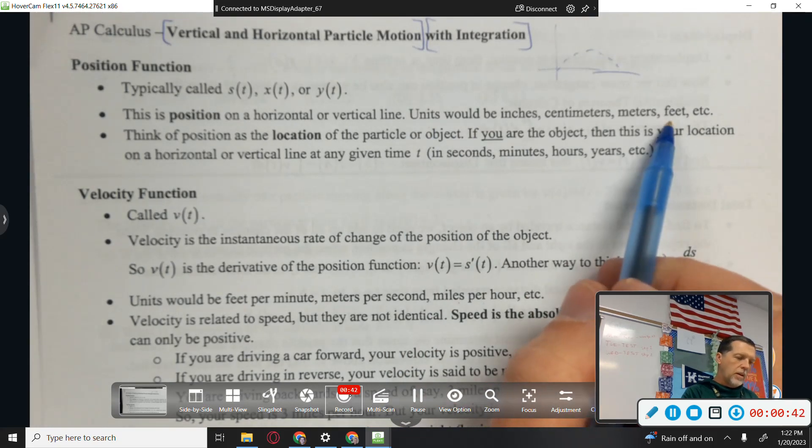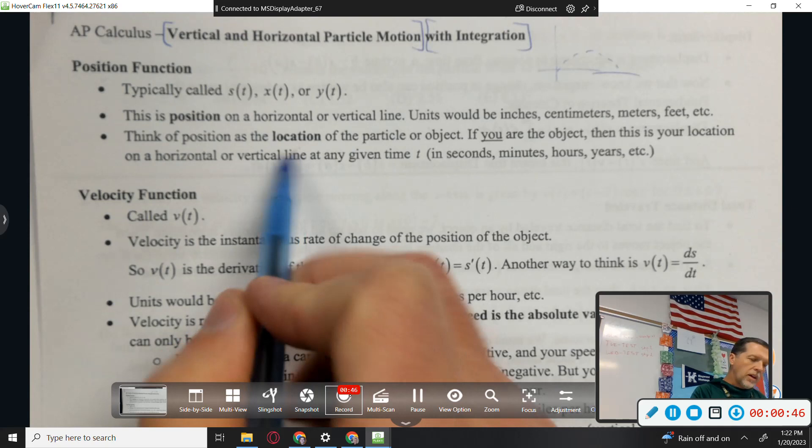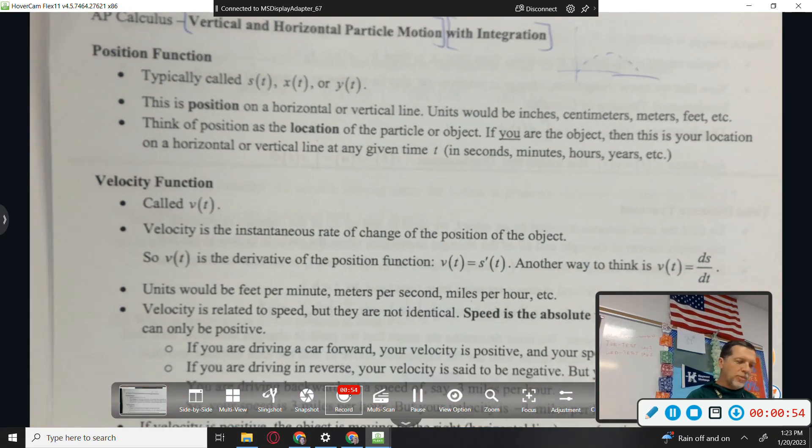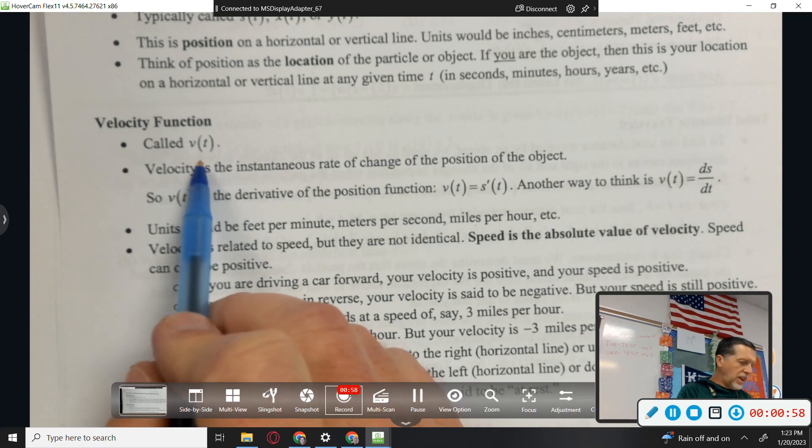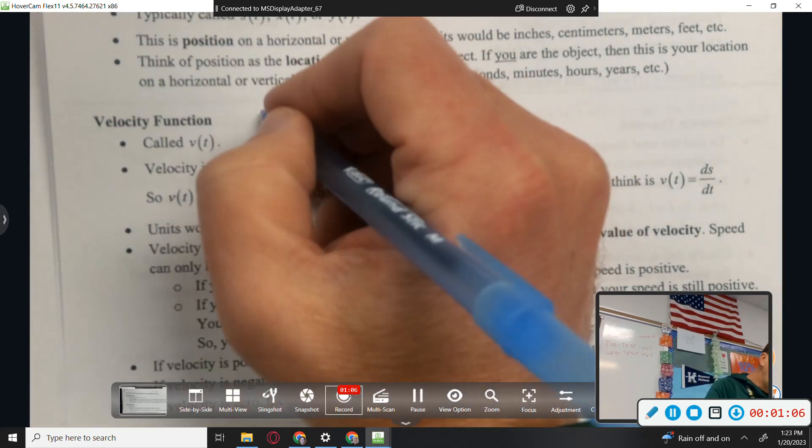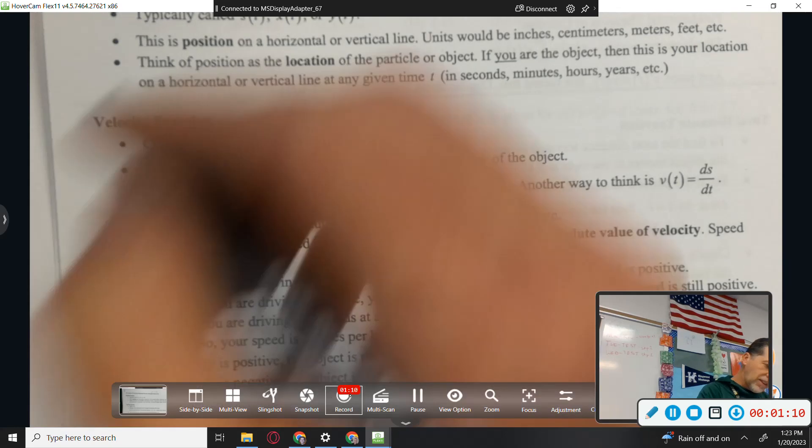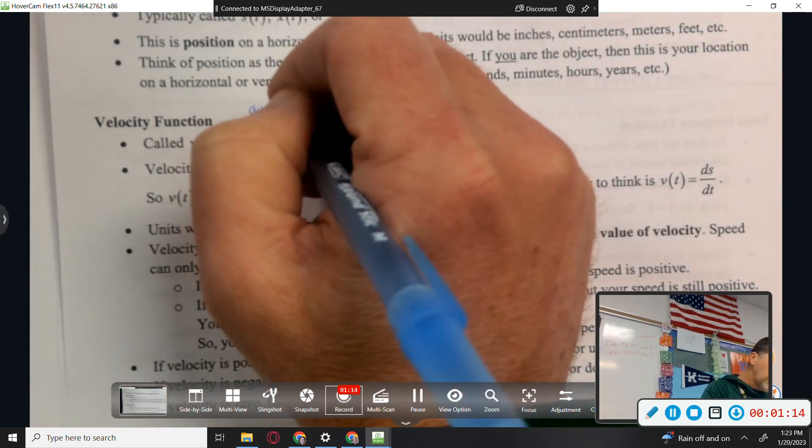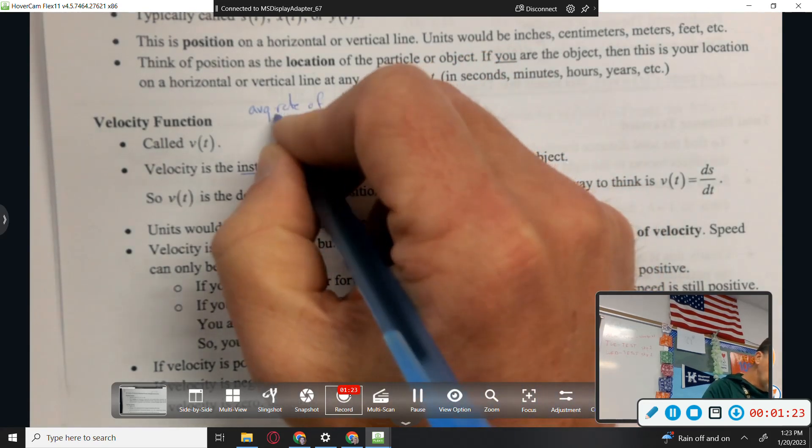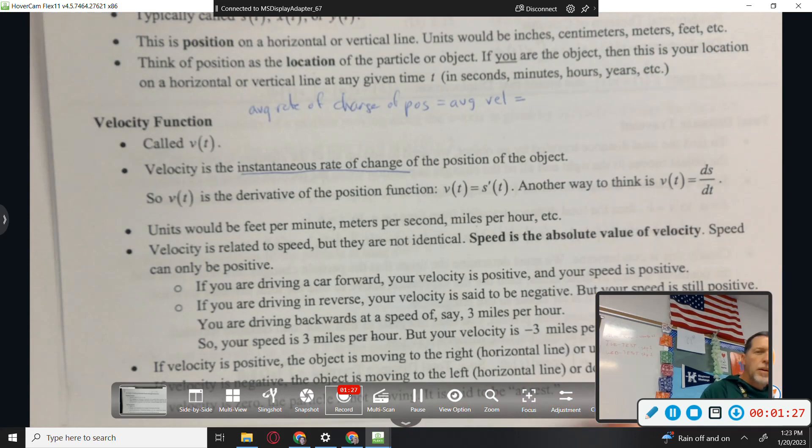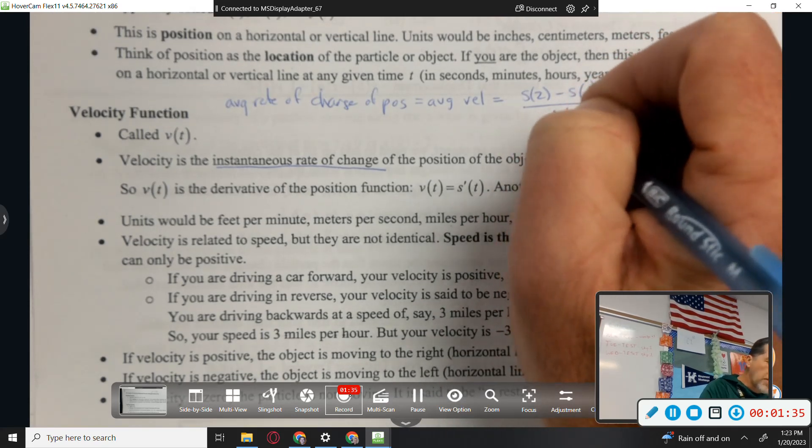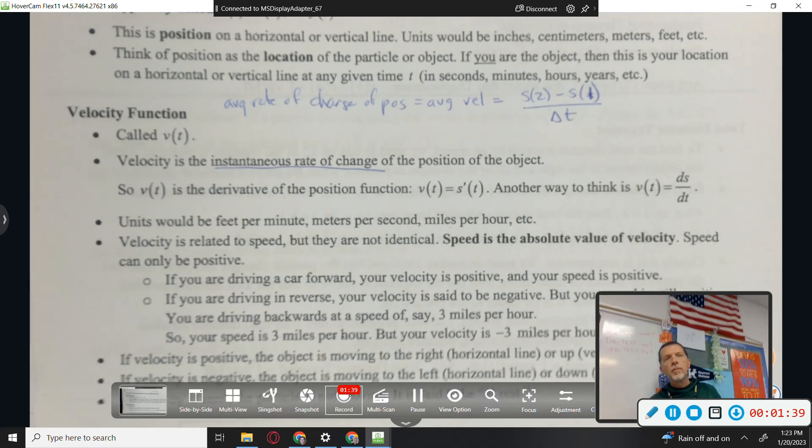Units would obviously be distance units. Position is the same as the location. If you are the object, then this is your location. And T is in time. We've done this already. We're just going to add some stuff here in a minute. Average rate of change of position, which means average velocity, is S of 2 minus S of 1 over change in time. That's average velocity.